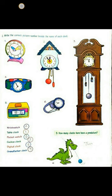Wrist watch: 4th. Table clock: 1st. Pocket watch: 6th. Cuckoo clock: 2nd. Digital clock: 5th. Grandfather clock: 3rd. Write the numbers according to the picture.